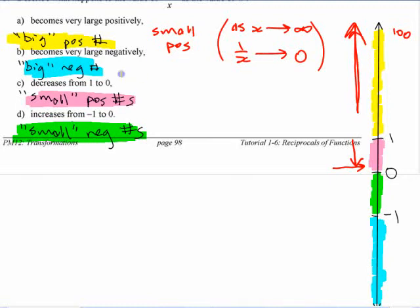What happens as x becomes very large negatively? What happens? If x becomes large negatively, big negative numbers, then this is going to be small negative numbers, right? For the same reason as before, if I let x go that way, its reciprocal is now in here, right? That's where its reciprocal is. Okay, the reciprocal of a big negative number is a small negative number.